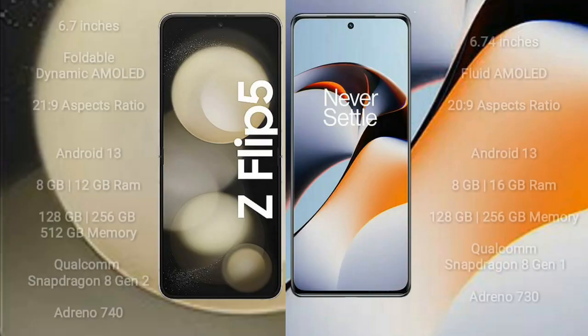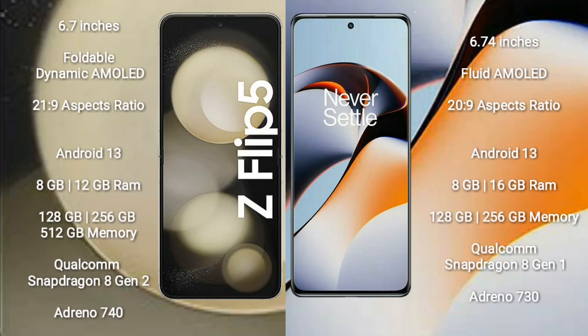Samsung Galaxy Z Flip 5 comes with a 6.7-inch foldable dynamic AMOLED display and aspect ratio 21:9. OnePlus 11R comes with a 6.74-inch flat AMOLED display and aspect ratio 20:9.